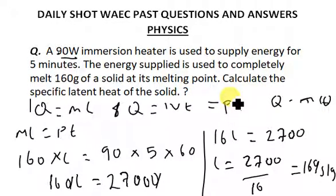In general, remember the three important formulas: Q = mL for latent heat, Q = IVt. The unit for specific latent heat is joules per gram. That's all about this daily shot for today. Thanks for watching. Make sure you subscribe, share, and like. God bless you.